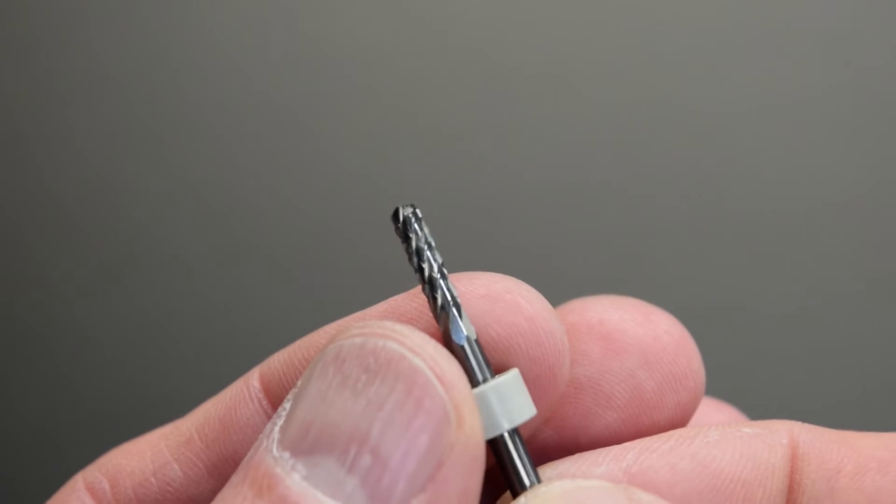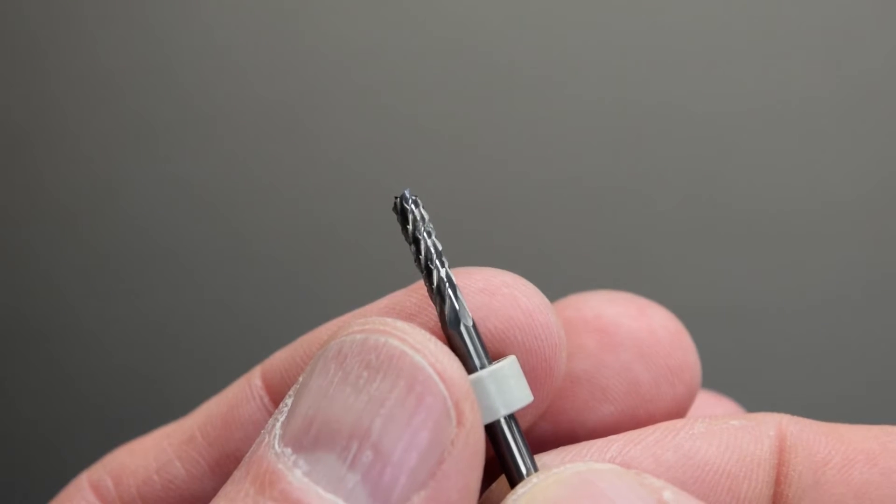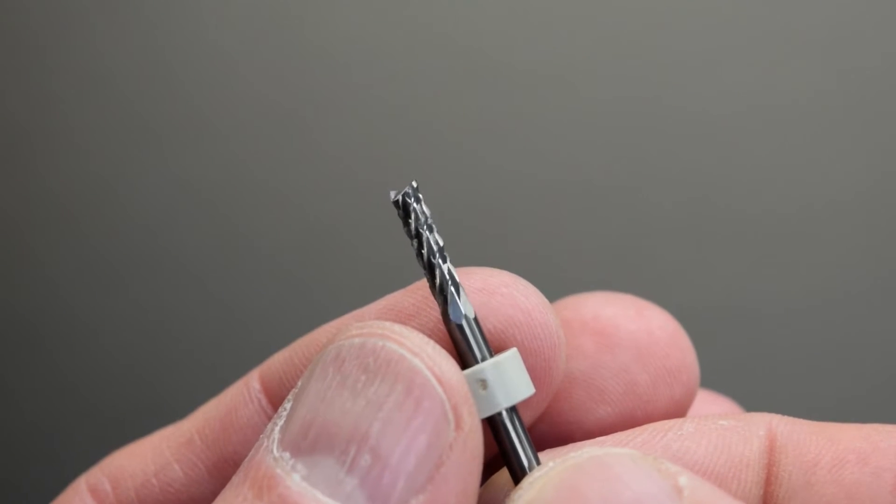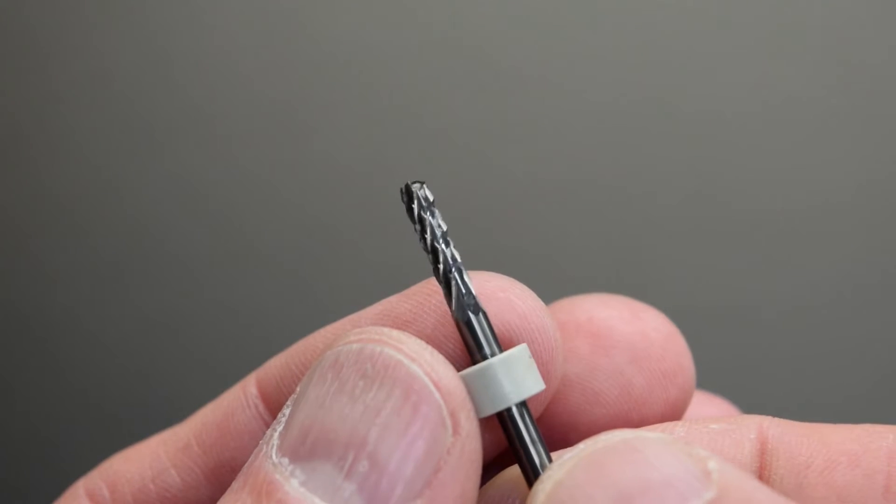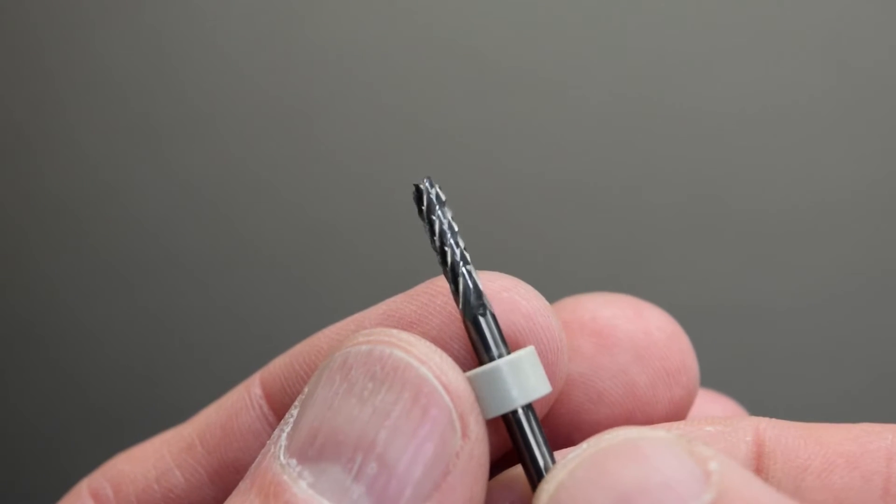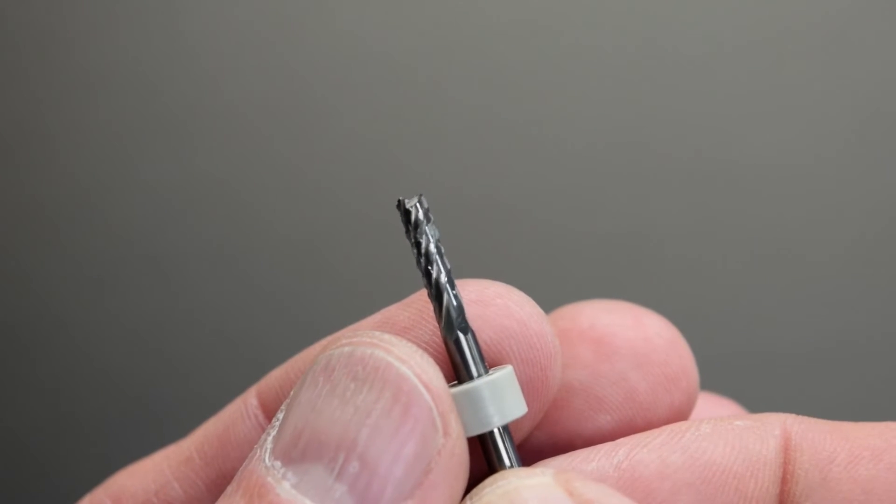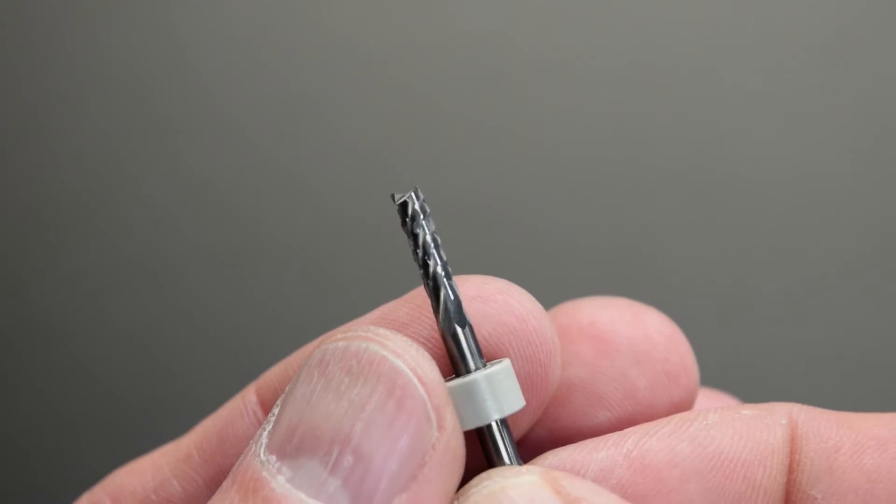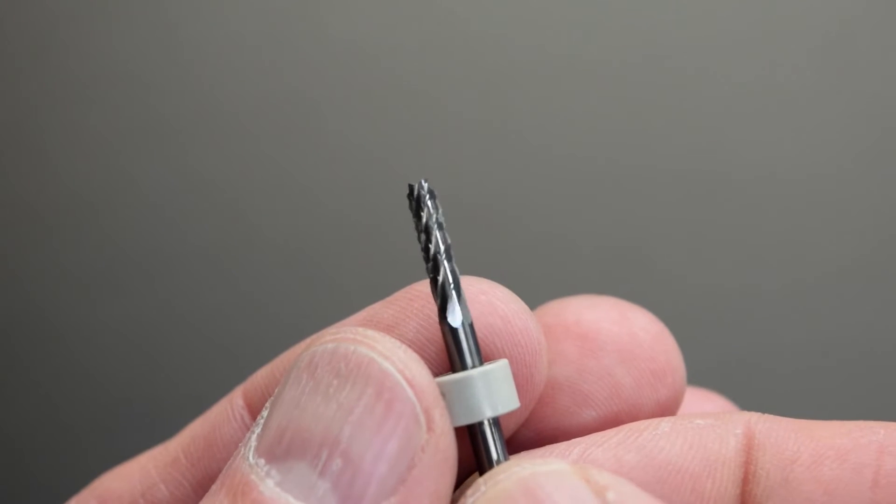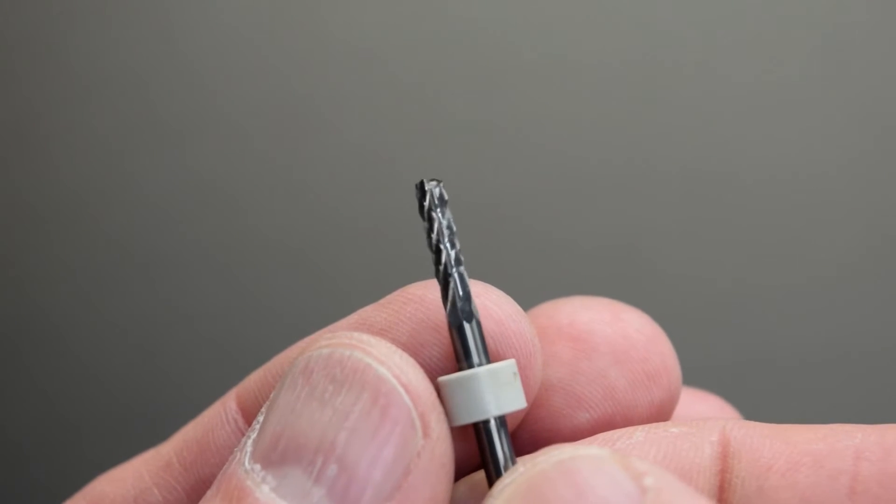If you haven't seen these types of cutters yet, this is what they look like. Tiny little end mills, if you will. They've got serrated flutes on them so that they cut rather nicely. This particular one is about three millimeters in diameter, or an eighth of an inch for us people here in the US.